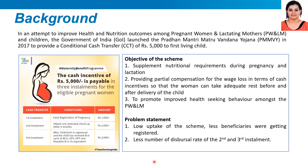The uptake of the scheme plays an important role in the aspirational district program as well, as it addresses the following indicators: percentage of ANC registered within the first trimester against the total, percentage of pregnant women registered for ANC against estimated pregnancies, as well as percentage of infants with low birth weight under 2,500 grams.